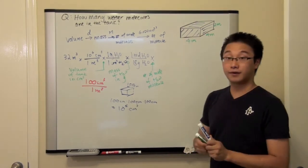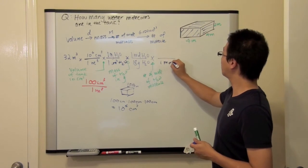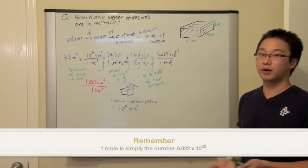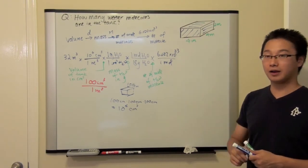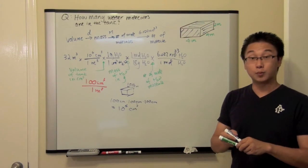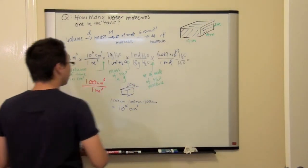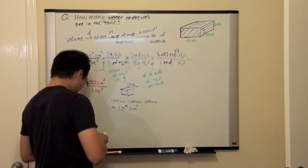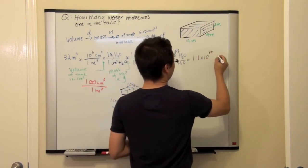At the very end, we would like to find out the actual number of water molecules. So we multiply by 6.022 times 10 to the 23rd per mole. You have the option of writing 'water molecules' or not, because one mole is just a number. If you want to write water molecules, just make sure you write it on both the numerator and the denominator. And at the end, we calculate the answer using a calculator.